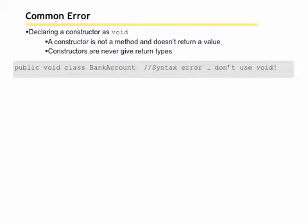In this case, they say public void class BankAccount, and this is an error for two reasons. Number one, if we're trying to write the constructor, because of the word void. And number two, because of the word class. You don't include the word class in your constructor.